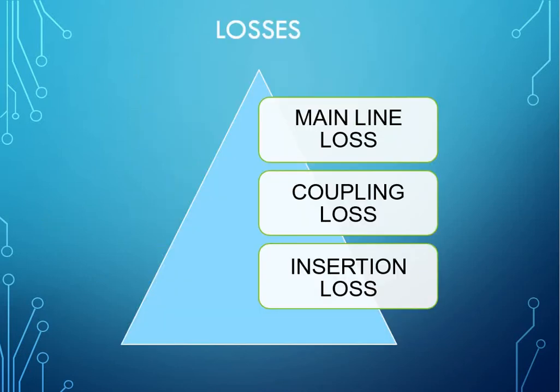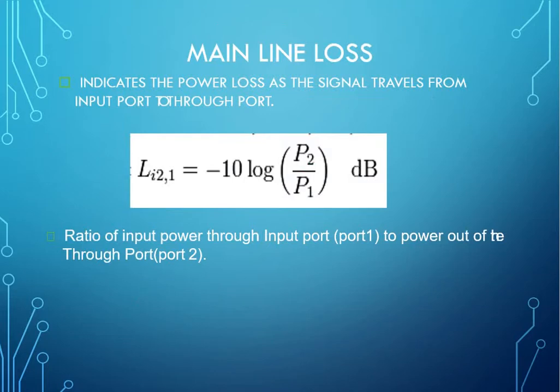Next is losses in the directional coupler. The directional coupler consists of three main losses: mainline loss, coupling loss, and insertion loss. Mainline loss indicates the power loss as the signal travels from the input port to the through port. Ratio of the input port power to the power output of the through port.